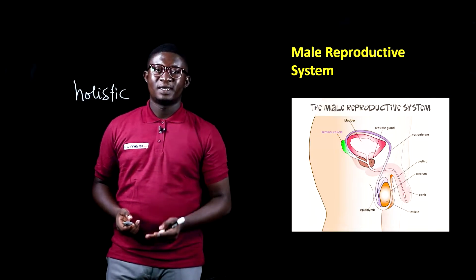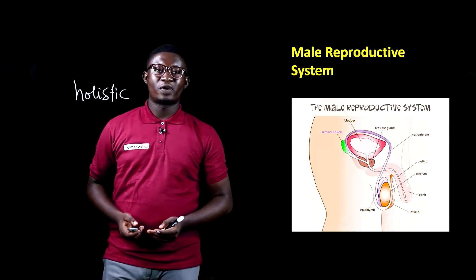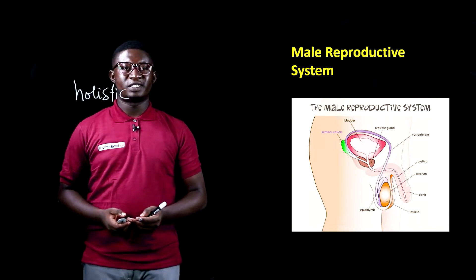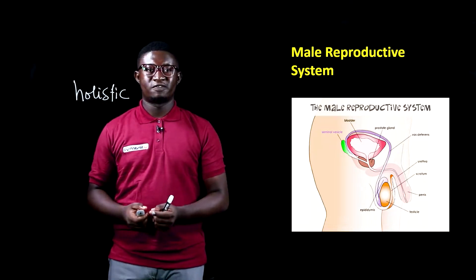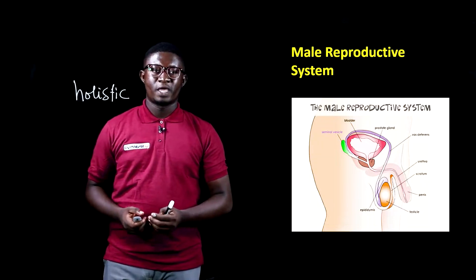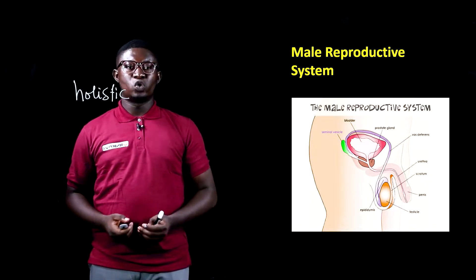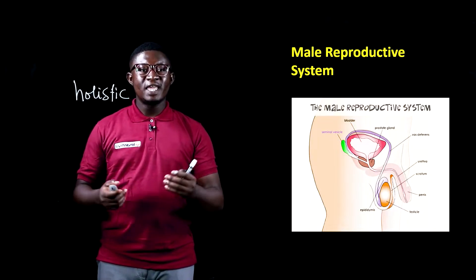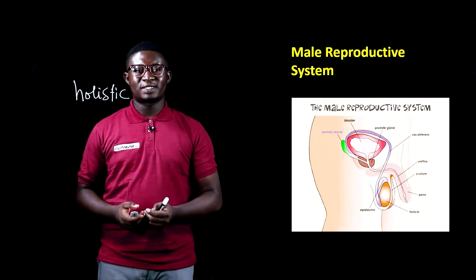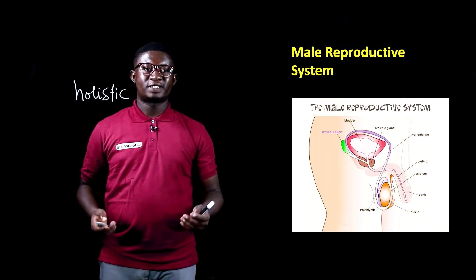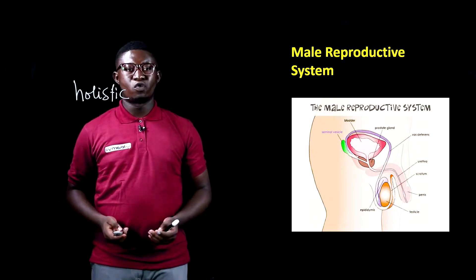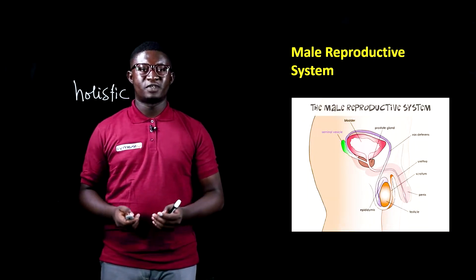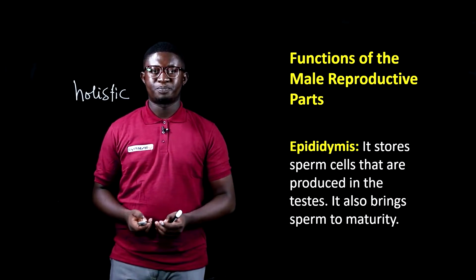This is a pictorial representation of the male reproductive system. Now, we are going to look at each one of the parts and the functions they perform in the male reproductive system.